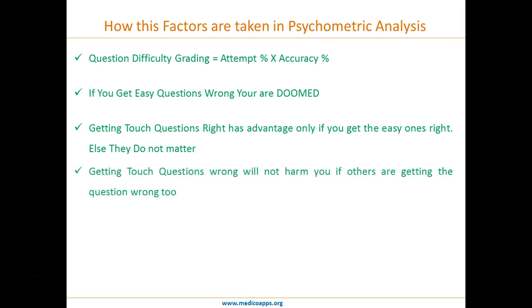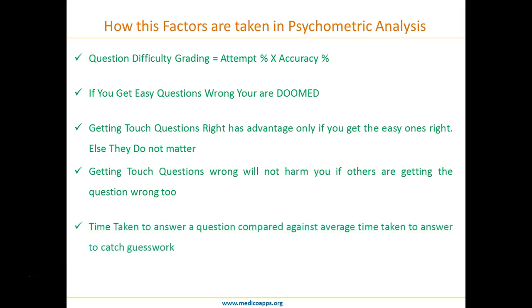Getting tough questions wrong will not harm you if others are also getting them wrong, because the computer knows such questions cannot be answered by everybody. Time taken to answer a question, compared against the average time taken, is the key parameter used to catch guesswork. These are the key takeaways for psychometric analysis.